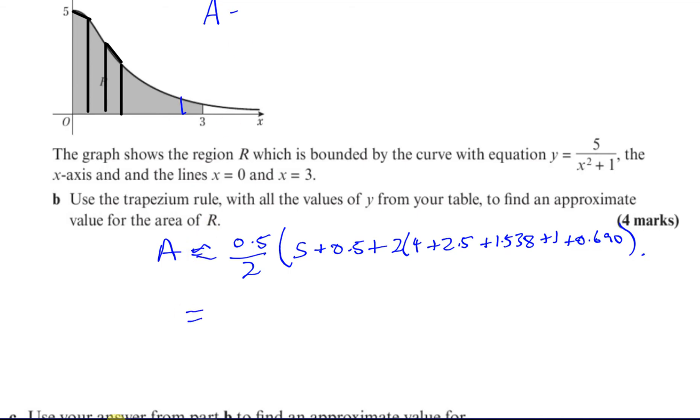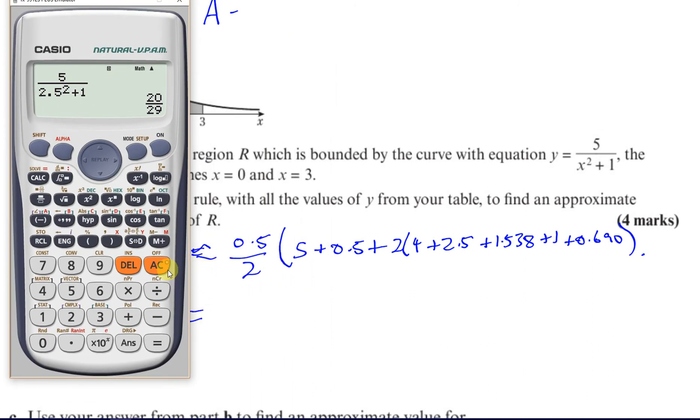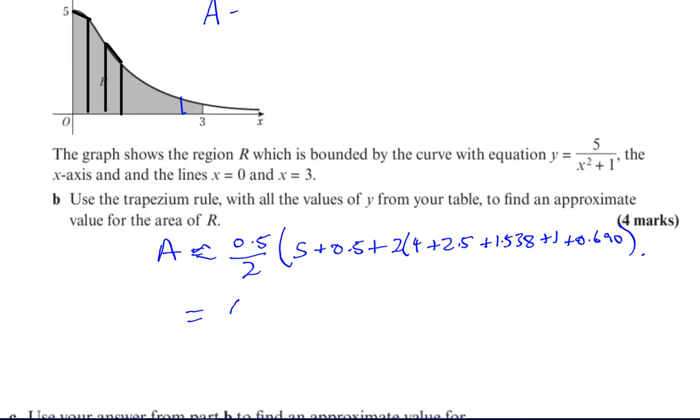Okay, so let me just stick that in the calculator then, and see what we get. So we're going to have 0.5 over 2, that's 0.25 times, so I can just put my bracket here, and I'll have 5 plus 0.5, plus 2 times 4, plus 2.5, plus 1.538, plus 1, plus 0.690. Close the bracket, and close the other bracket. See, we had two brackets there. So one bracket is for when we did 2 times that, and one bracket is for where we had, so there's two brackets to close, so you end up with 6239 over 1,000, which is 6.239. 6.239 square units. Okay, so there we have the answer for part B.